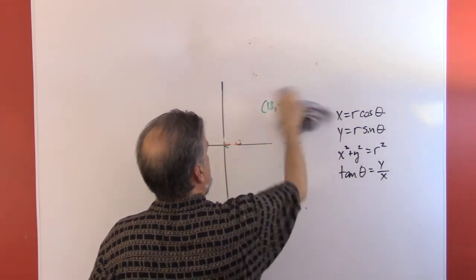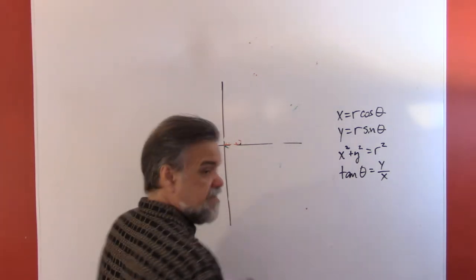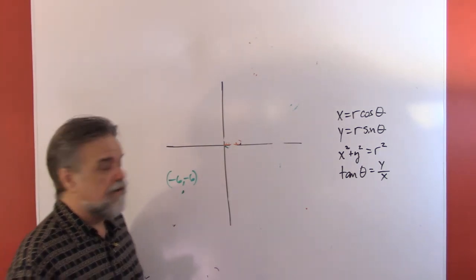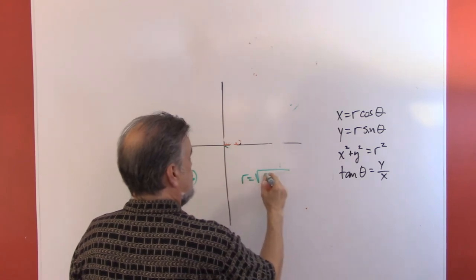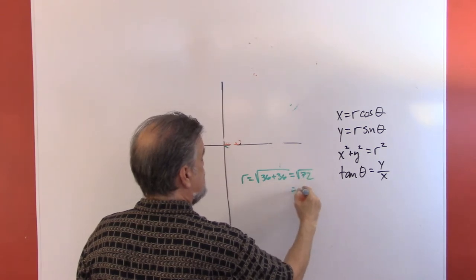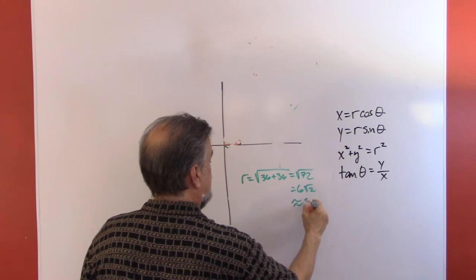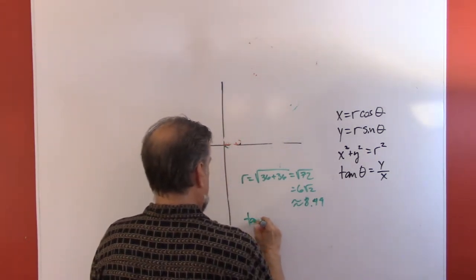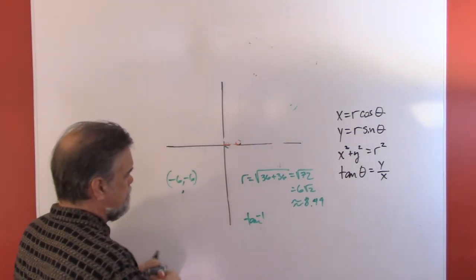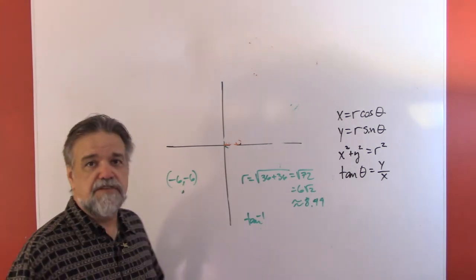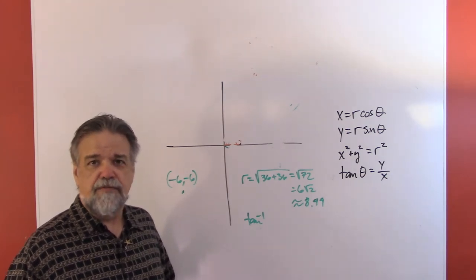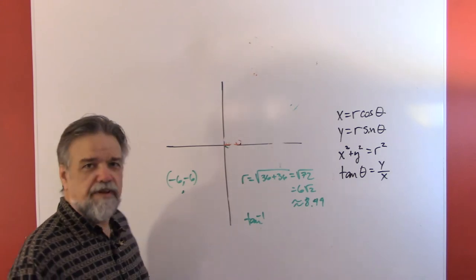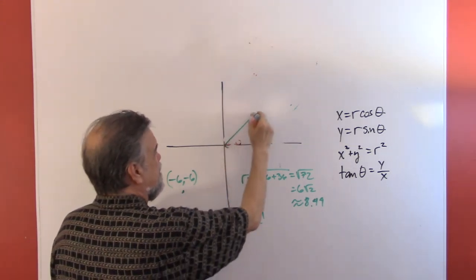This time we're taking the point (-6, -6) — third quadrant. r is the square root of 6 squared plus 6 squared, which is the square root of 72, or 6 times the square root of 2, approximately 8.49. For theta, y over x is -6 over -6, which is just 1, so I want the inverse tangent of 1. I know that's 45 degrees — but wait, that's pointing up into the first quadrant, not down into the third quadrant. What gives?